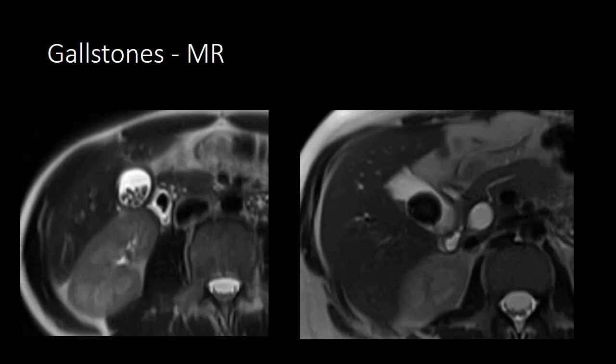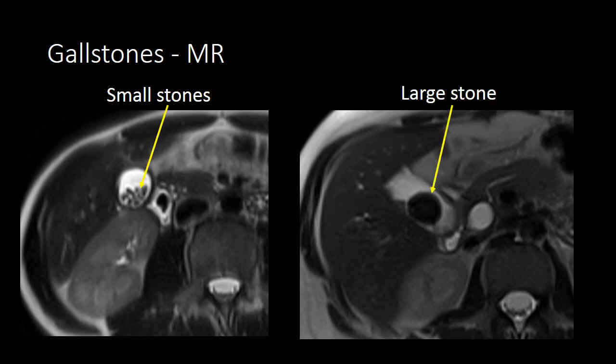MRI has a high sensitivity for the detection of gallstones. We can detect both small and larger gallstones within the gallbladder, and we can often characterize any complications such as acute cholecystitis, pancreatitis, or cholangitis that may result from gallstones within the cystic duct or common bile duct.